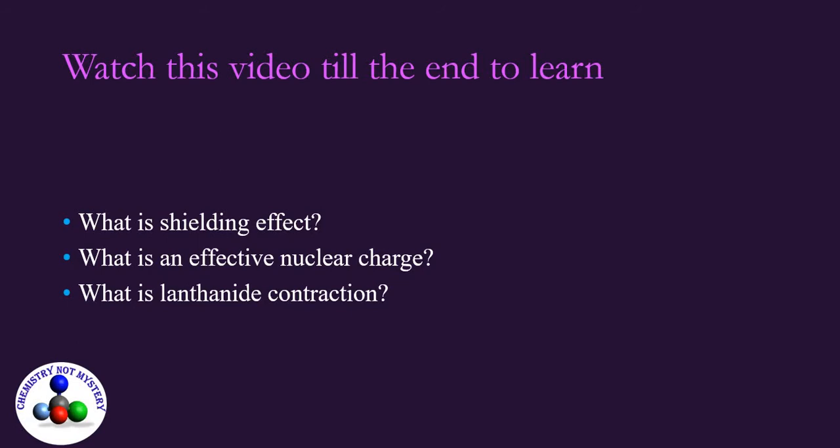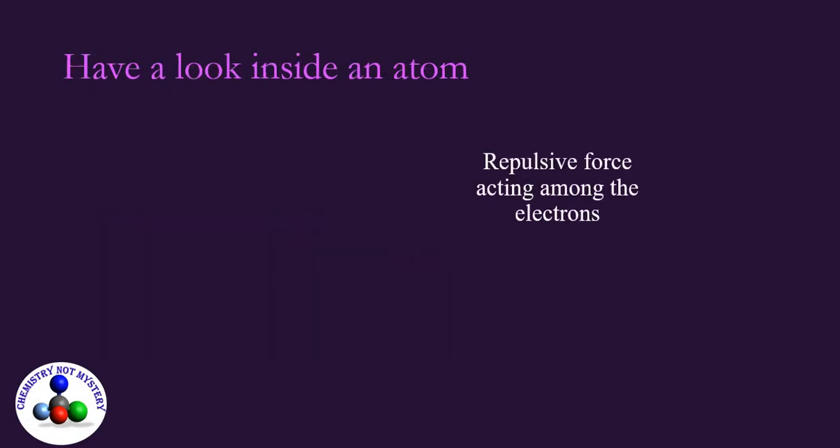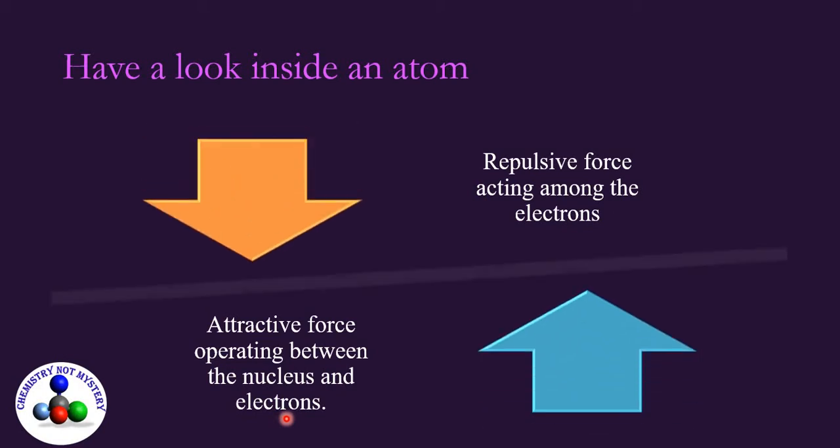To understand it let's have a look inside an atom. In an atom there are repulsive forces acting among the electrons and attractive forces operating between the nucleus and electrons. These two opposite forces balance each other for the stability of an atom.